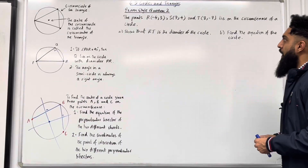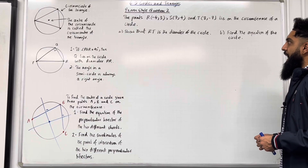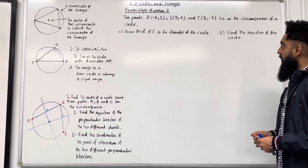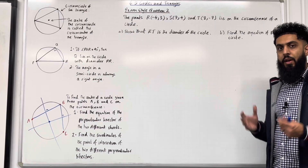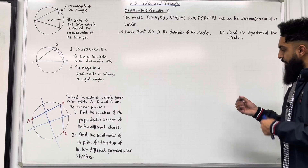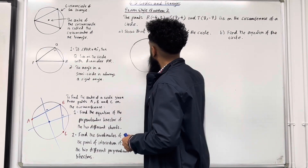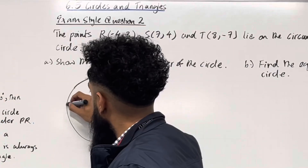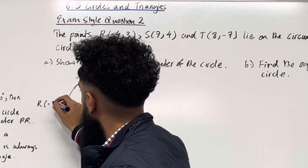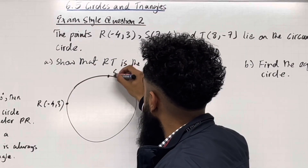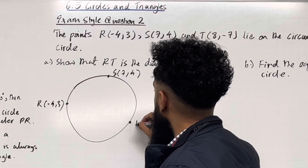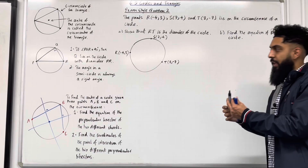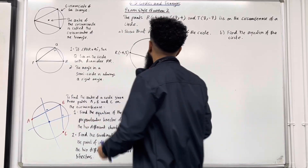Here is exam-style question 2. The points R(−4, 3), S(7, 4) and T(8, −7) lie on the circumference of the circle. Part A: show that RT is the diameter of the circle. Part B: find the equation of the circle. Let's start off by setting up a diagram. We have a circle, and we know that R, S and T lie on the circumference. We want to show that RT is the diameter.